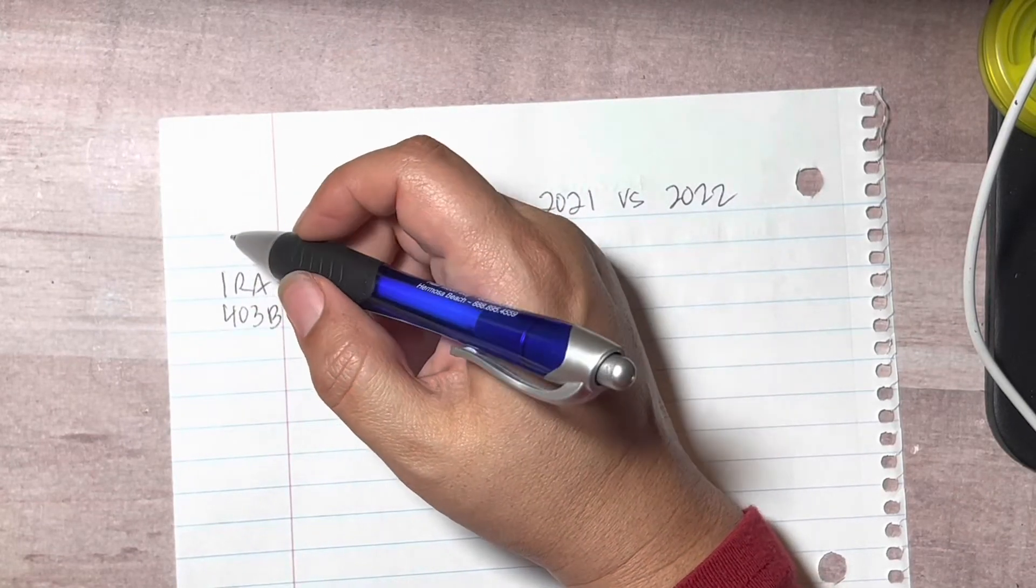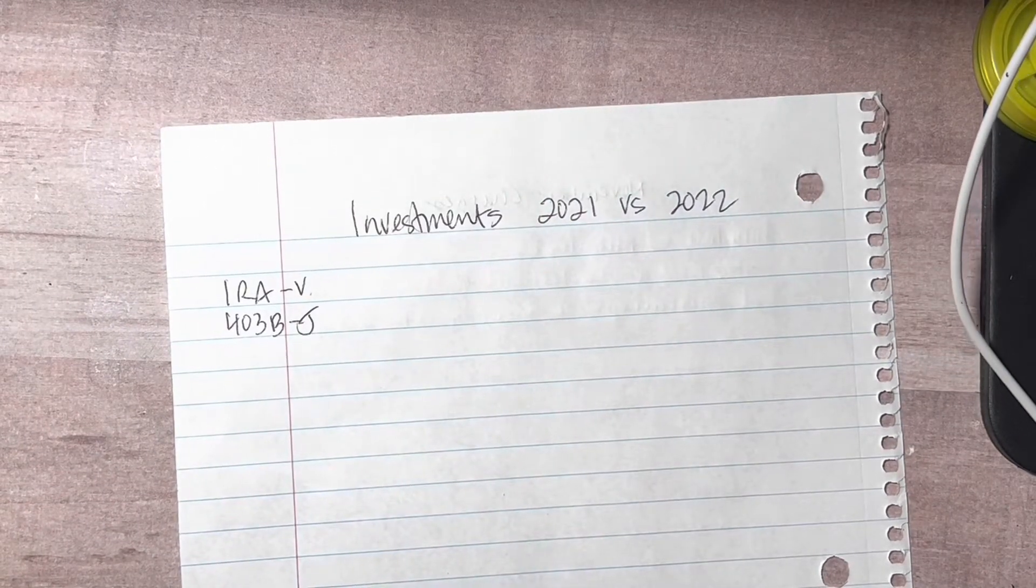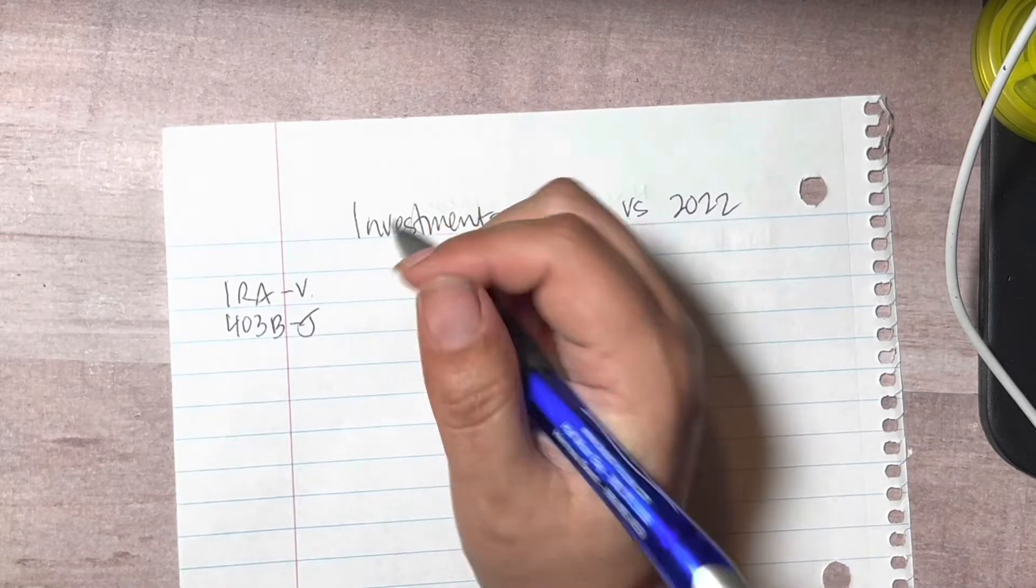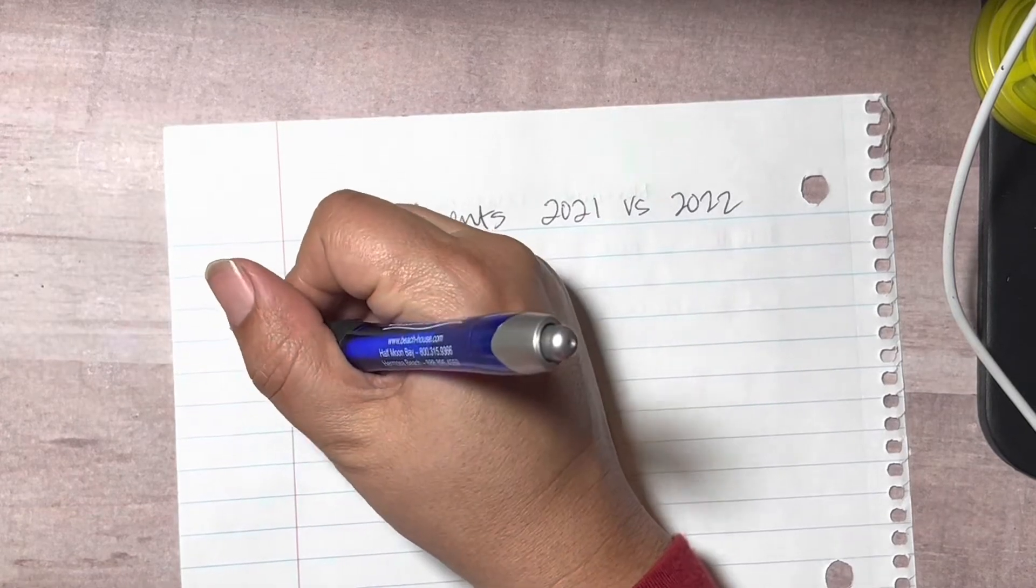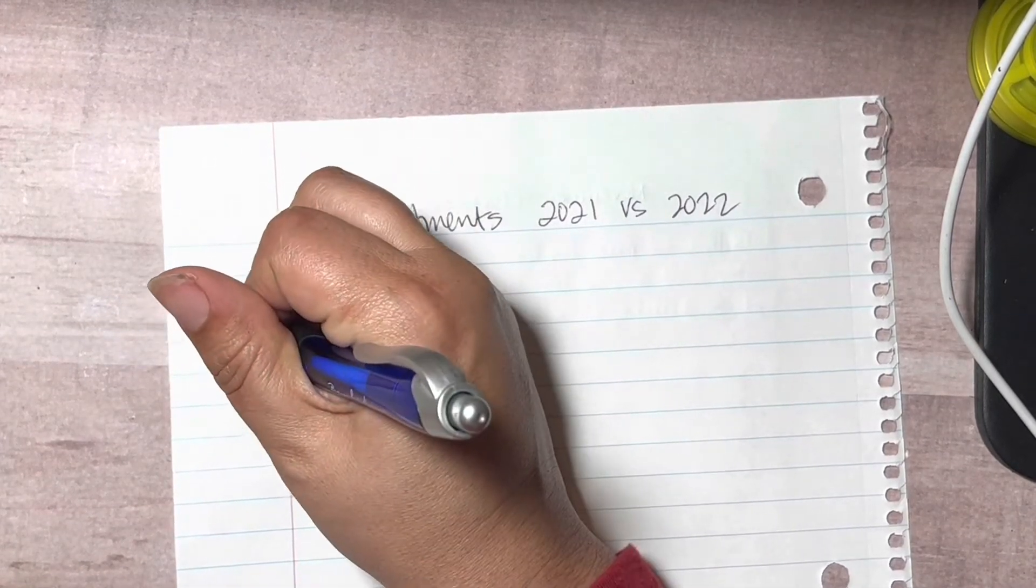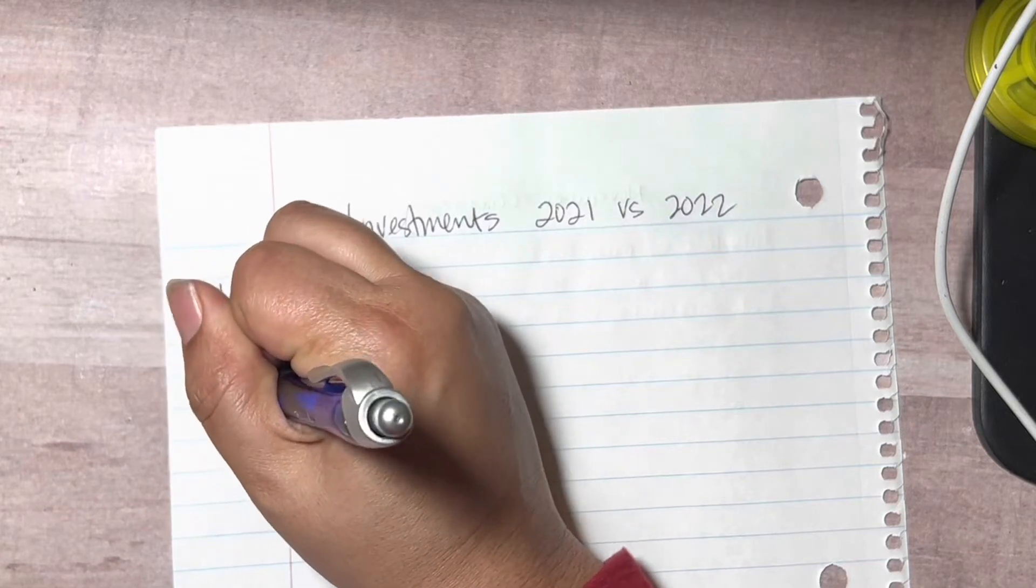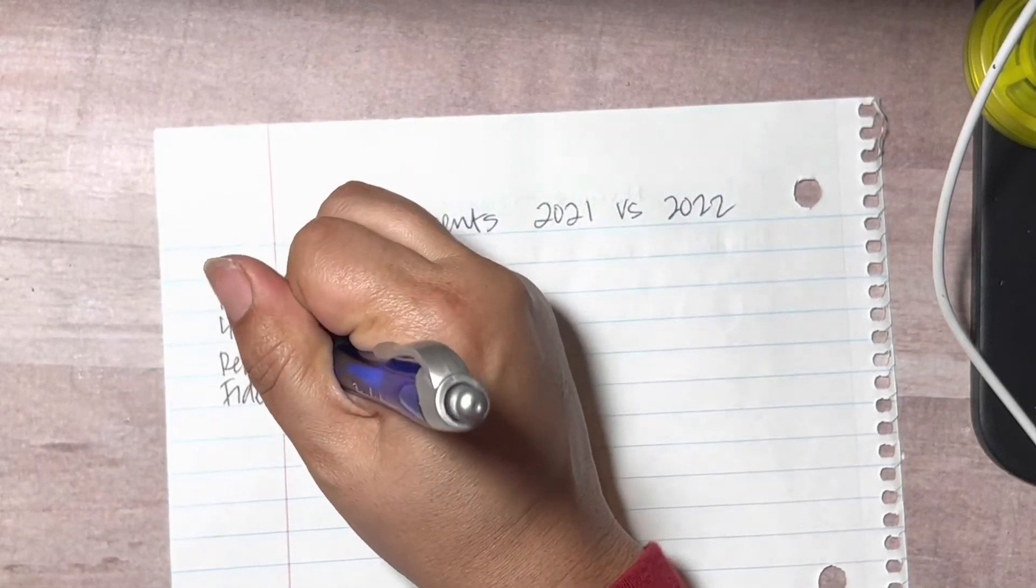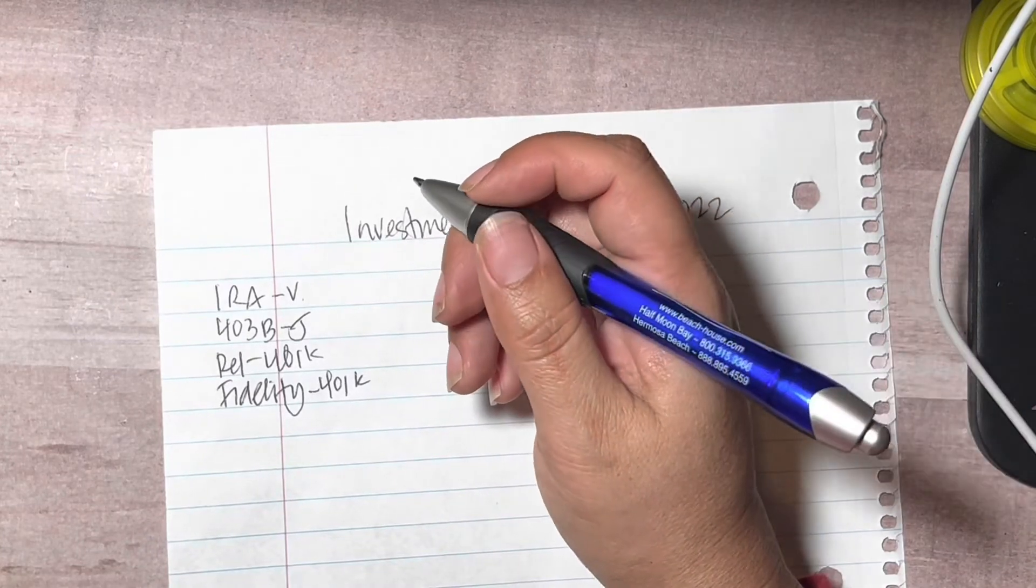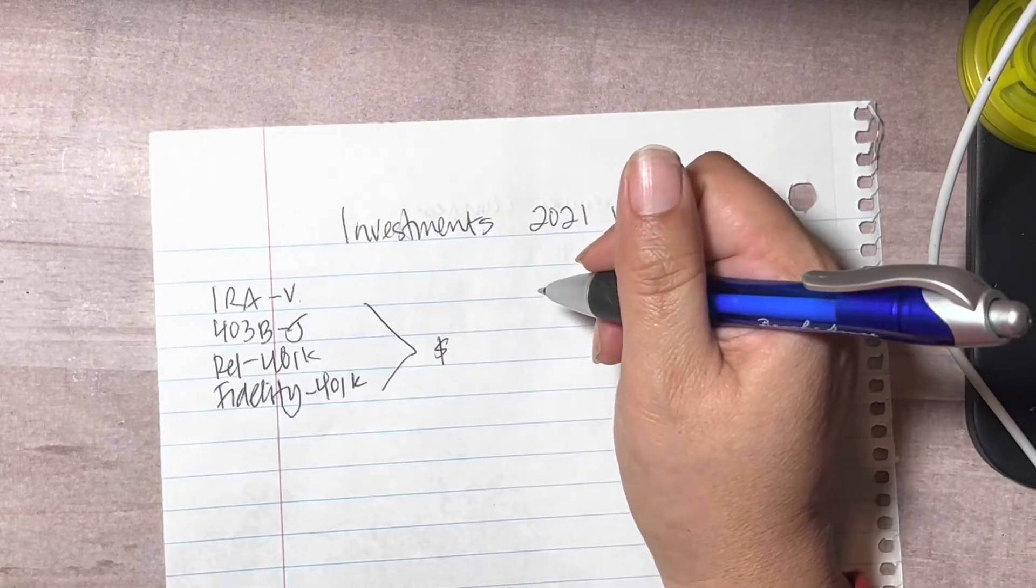Then I have two other accounts that are 401ks that I'm no longer contributing to, meaning I worked at a place where I'm just not contributing money towards it anymore, but they still are there and I need to transfer them into an IRA. One is called Rel and the other one is Fidelity, which I need to just transfer into an IRA. So they're 401ks and that's it. Last year, the total of this at the end of November of 2021 was $390,874.